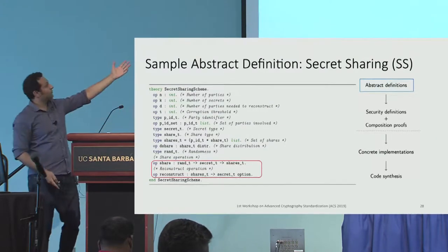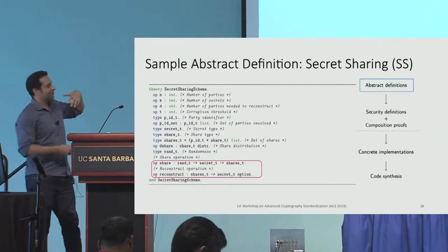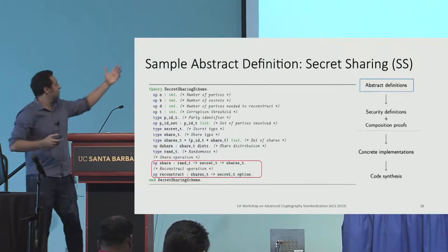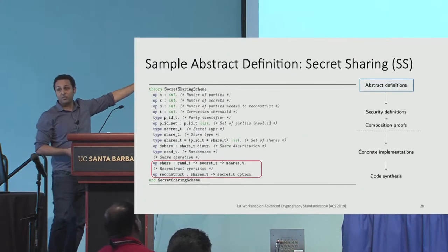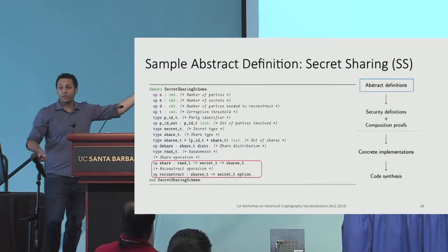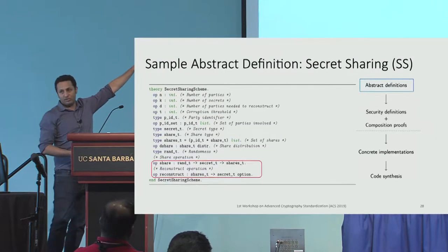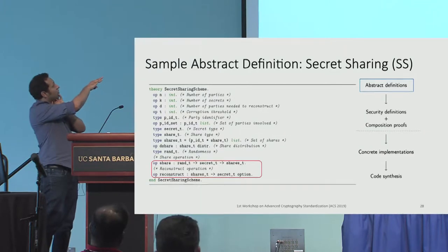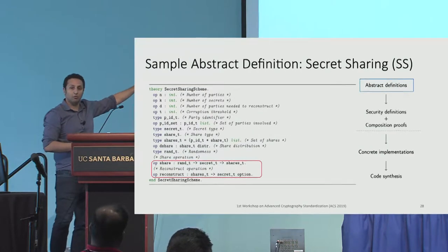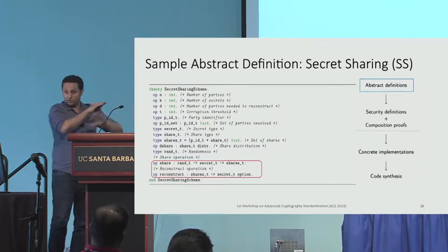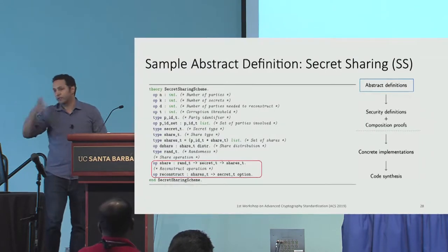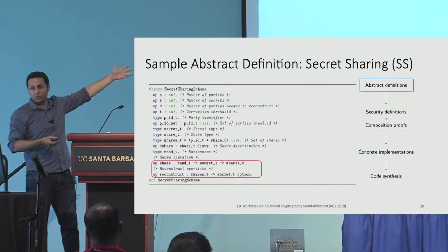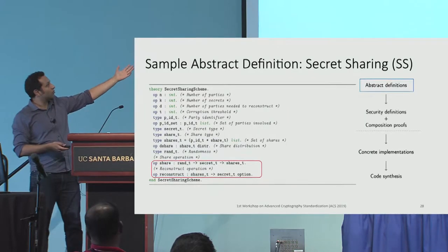Here is an example of an abstract definition of secret sharing — the same way you would define it in a paper. What matters is in the red box: two algorithms, share and reconstruct. Share takes some randomness, a secret, and outputs shares. Reconstruct takes the shares and outputs the secret. All this code is in the paper and on GitHub — it's all open source. The good thing about working at the abstract level is you do it once, and later every time you instantiate it using a different mathematical structure — additive sharing or polynomial-based — it still satisfies these two definitions.